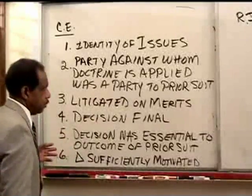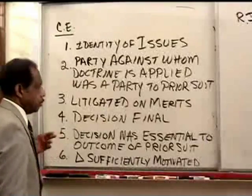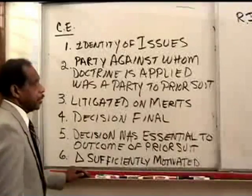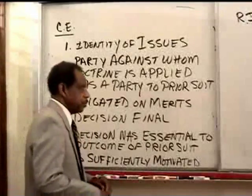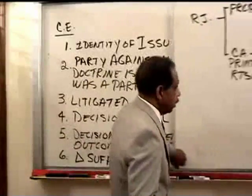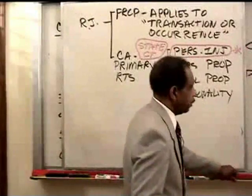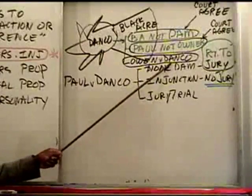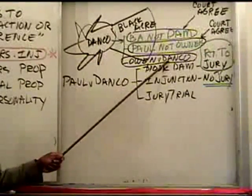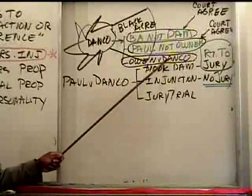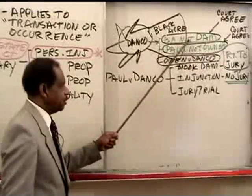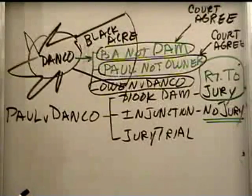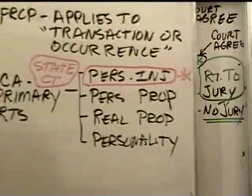The sixth item is that the defendant had to be sufficiently motivated — so that it's fair to hold the prior decision against them. You can see how the defendant can easily not be sufficiently motivated when they think it's a small lawsuit, and unexpectedly the result is held against them in a big lawsuit. So these are the requirements for collateral estoppel. You need all six of these satisfied in order to apply the doctrine against somebody. In our case, where Owen is suing Dan Coe, Dan Coe is going to say to Owen, 'You can't sue us because the property wasn't damaged,' and he's going to try to apply collateral estoppel against Owen. The answer is no.